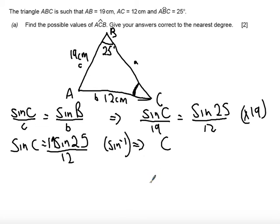So if I now calculate the angle C on my calculator should get an answer of 42 degrees to the nearest degree.